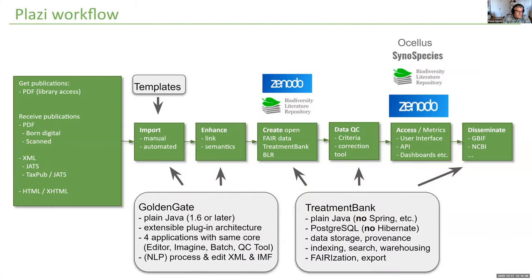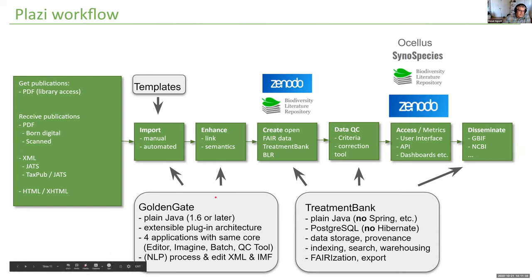The process is essentially linear. We get publications and import them — an important step because PDFs are really difficult to break open given how they're constructed. Once we have the text liberated, we can enhance it, create links, apply semantics, and create open FAIR data by making deposits and getting persistent identifiers back. We do data quality control, provide access and metrics, and disseminate the data using two major tools: GoldenGate for processing and TreatmentBank for storage and distribution.